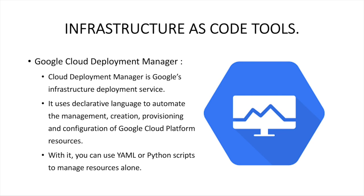These are some of the tools available as part of infrastructure as code. There are many more, such as Ansible, Chef, Puppet, and SaltStack, which can also be used to automate your infrastructure. However, in today's market, Terraform is one of the most famous tools and you will see many companies leveraging it. Please subscribe to the channel, leave a like if you enjoyed the video, and share it. Thank you.